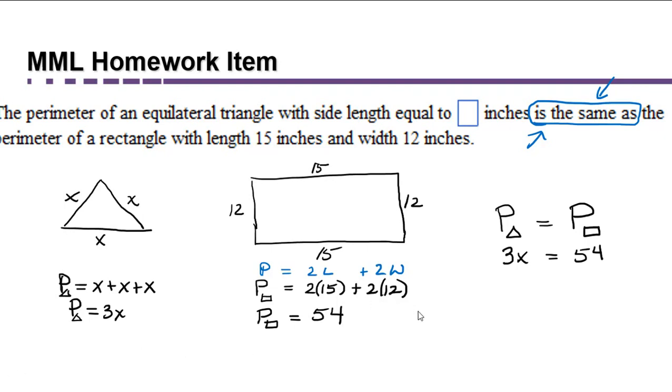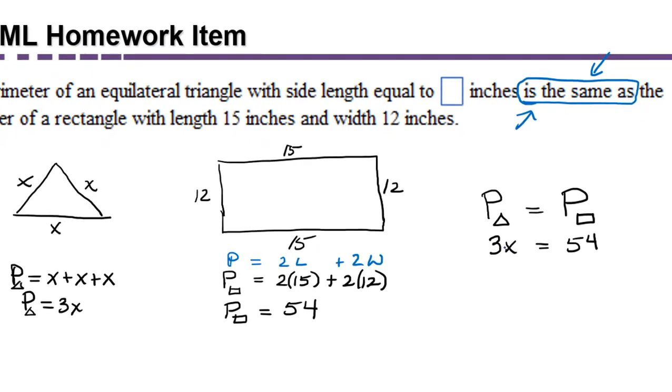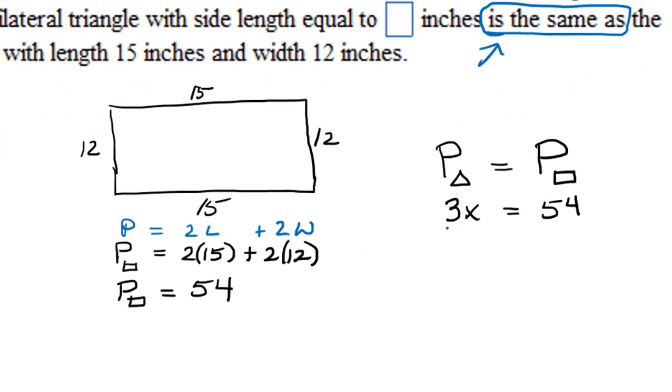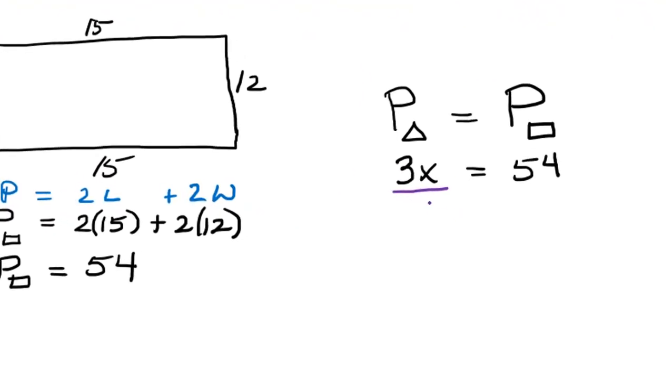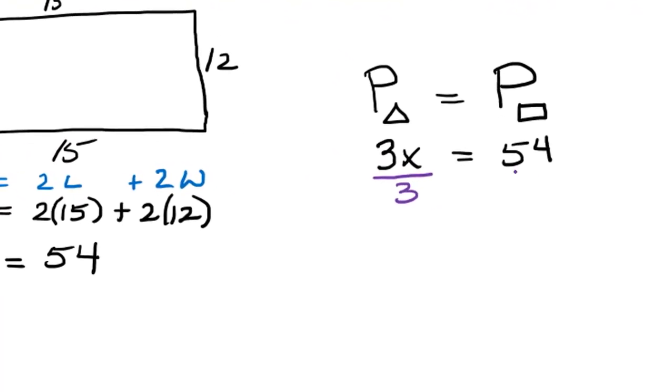You can ask yourself three times what unknown quantity would give us 54, or you can use a little algebra. Since the 3 is being multiplied by the x, and we would like to know x by itself, we can do the opposite operation. We can divide by 3 on both sides. This gives us x is equal to 18.